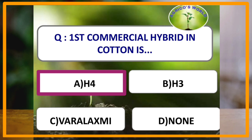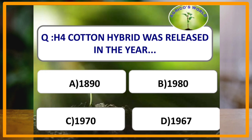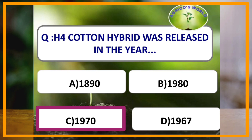H4 cotton hybrid was released in which of the following years? H4 cotton hybrid was released in the year 1970 by C.T. Patel, and it was developed in Surat.